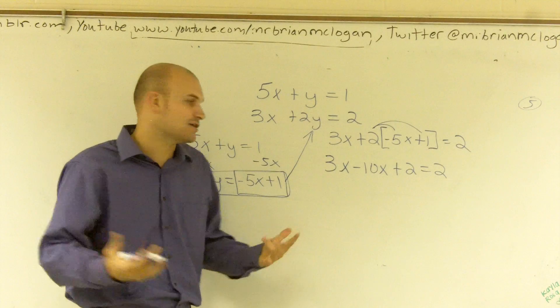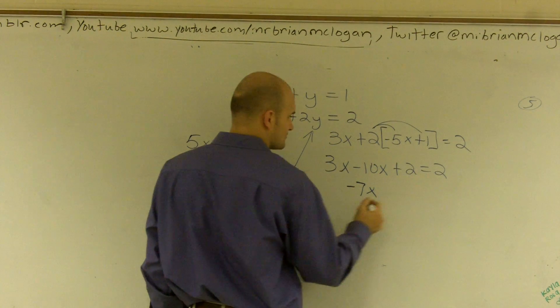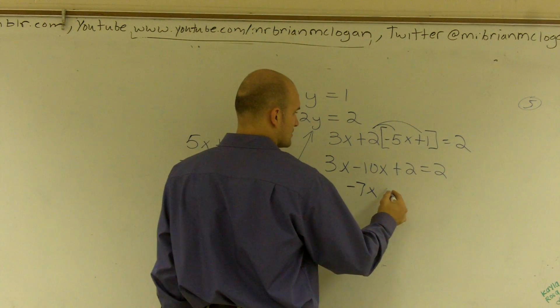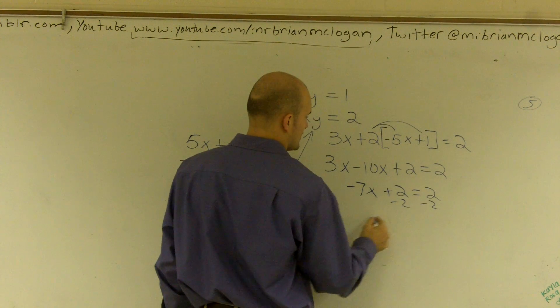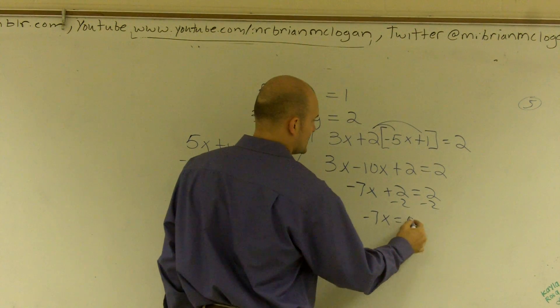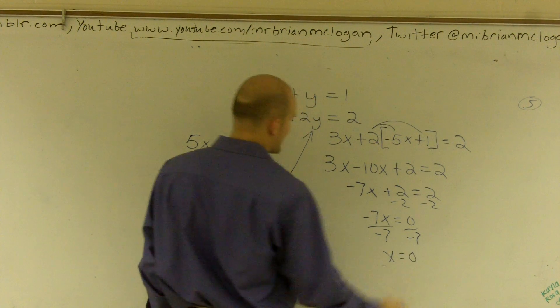So now I can find the value of x. I combine my like terms, which is negative 7x plus 2 equals 2. So I subtract 2, I get negative 7x equals 0, x equals 0.